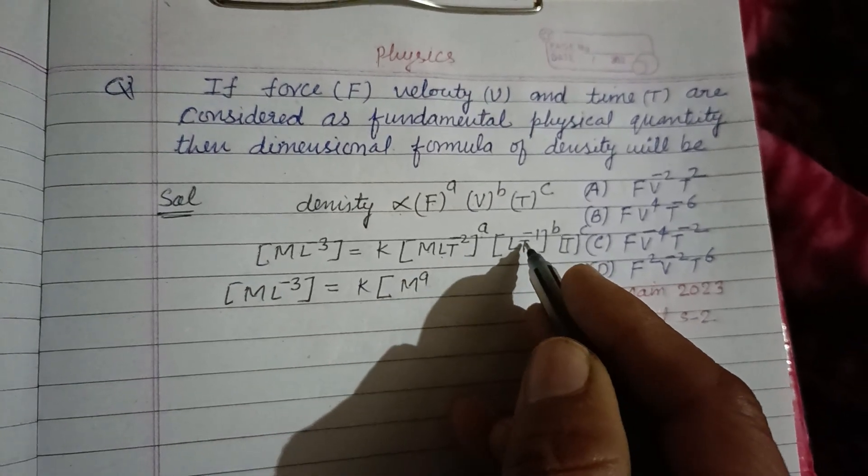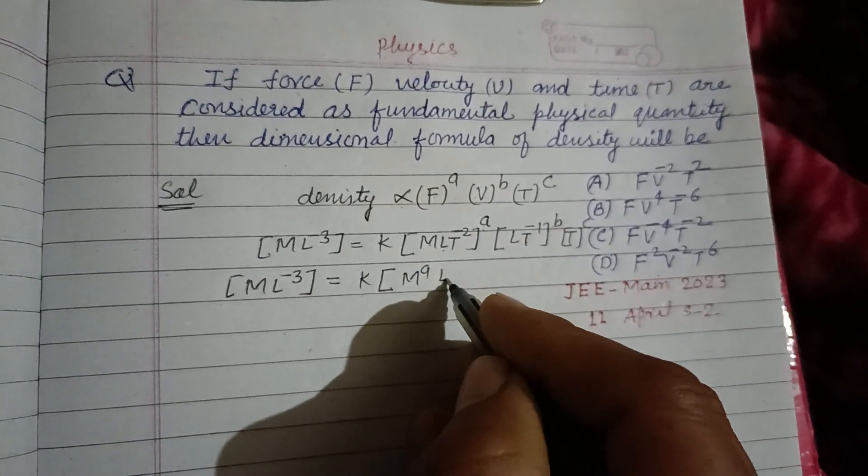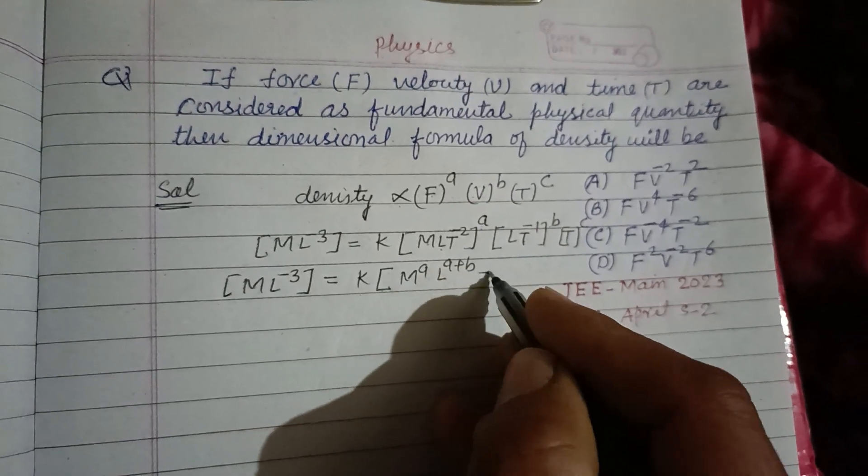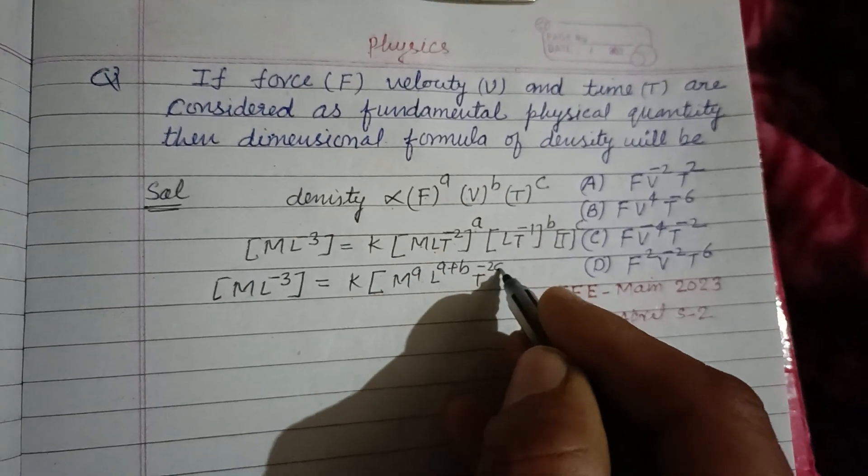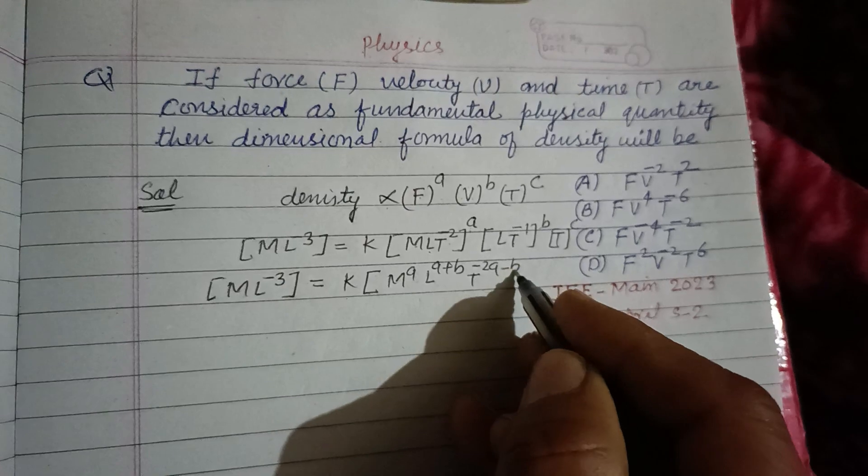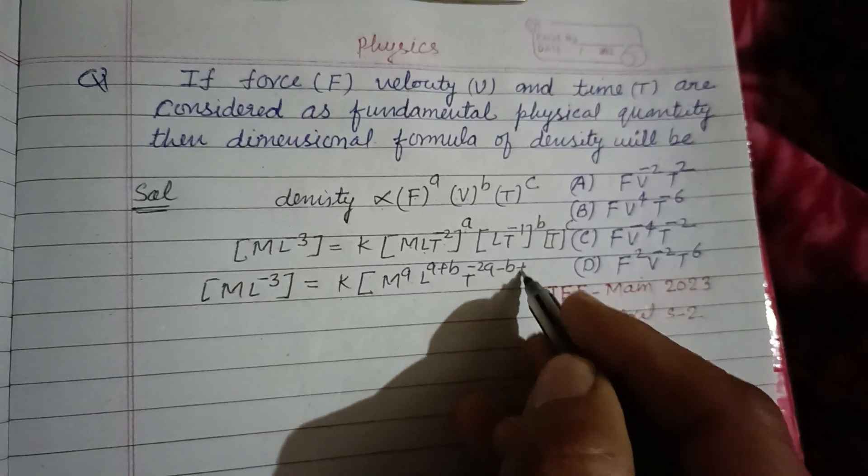L to the power A here, L to the power B. So A plus B, T to the power minus 2A, T to the power minus B and T to the power C.